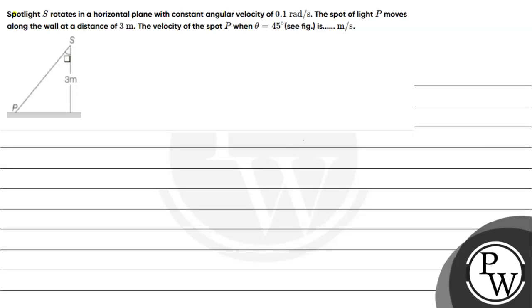Hello, let's see the question. Spotlight S rotates in a horizontal plane with constant angular velocity of 0.1 radian per second. The spot of light P moves along the wall at a distance of 3 meters.